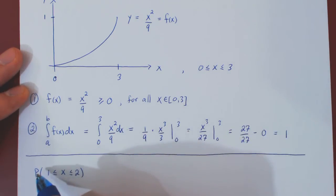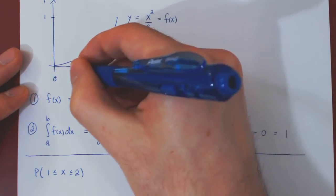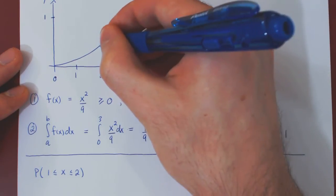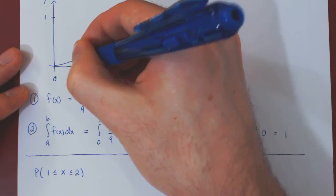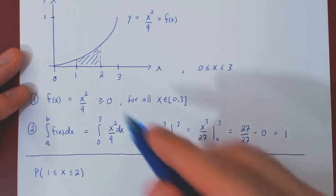We know that geometrically, the probability that x lies between some interval, in this case, 1 to 2, is nothing but the area below the density function over the given interval.